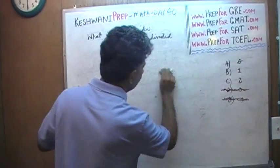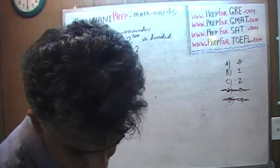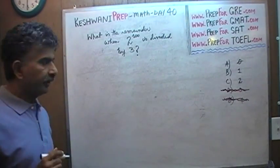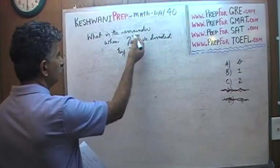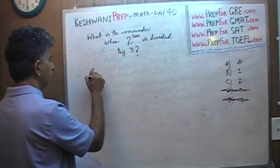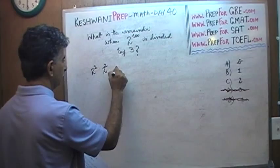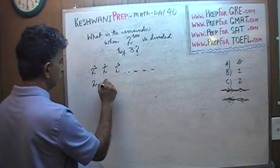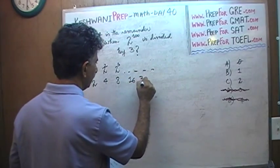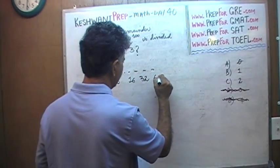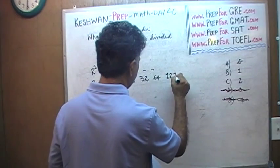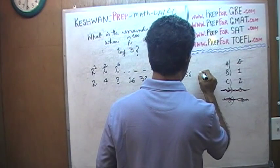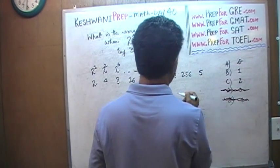Now let's do the proper solution. Let's see what happens when you raise 2 to 100. Don't freak out — we're not going to actually compute all of it. 2 raised to 1 is 2, then 4, 8, 16, 32, 64, 128, 256, 512 — we're simply doubling it each time.